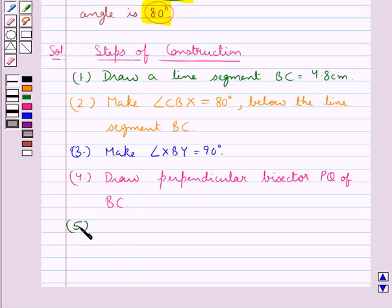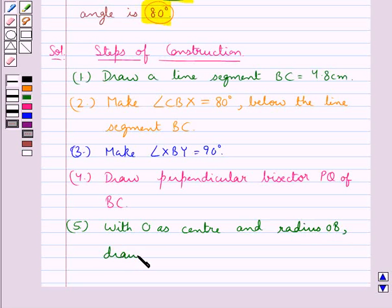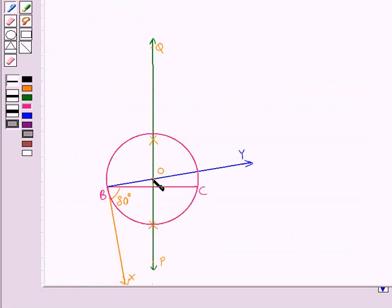Then in the next step with O as the center and radius OB we draw a circle. So taking O as the center and radius OB we draw this circle which is intersecting PQ at point A.